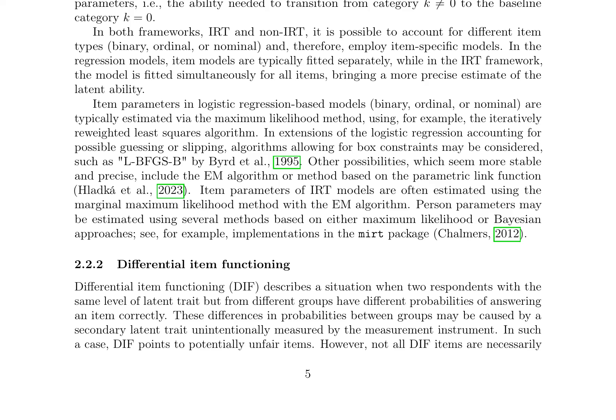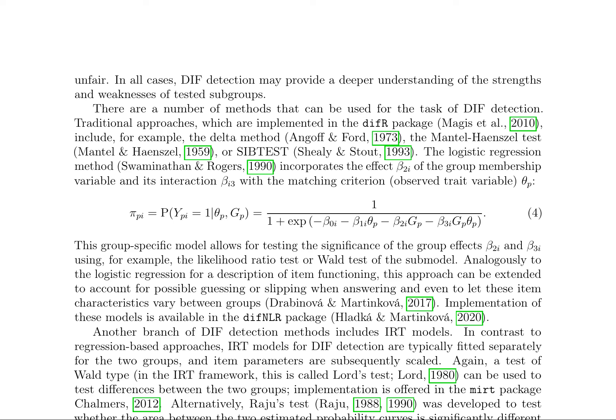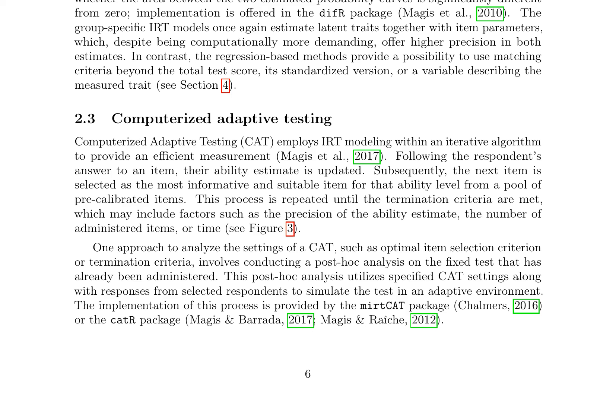Traditional DIF detection approaches include the DELTA method, the Mantel-Haenszel test, and SIBTEST. Logistic regression methods can also be used, incorporating the effect of group membership variable and its interaction with the matching criterion. IRT models for DIF detection involve fitting models separately for two groups and then scaling item parameters. Computerized Adaptive Testing (CAT) employs IRT modeling within an iterative algorithm to provide efficient measurement. In CAT, a respondent's ability estimate is updated after each answer, and the next item is selected as the most informative item for that ability level from a pool of pre-calibrated items, repeating until termination criteria are met.